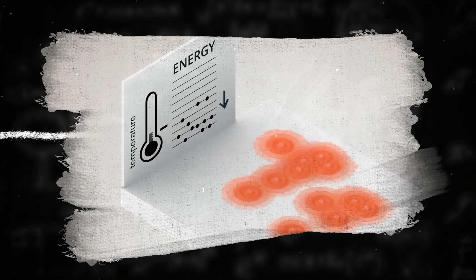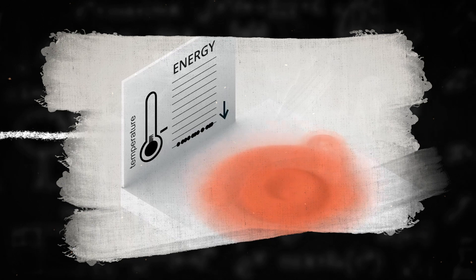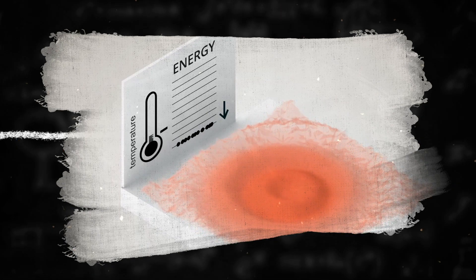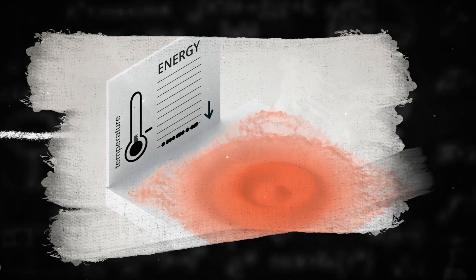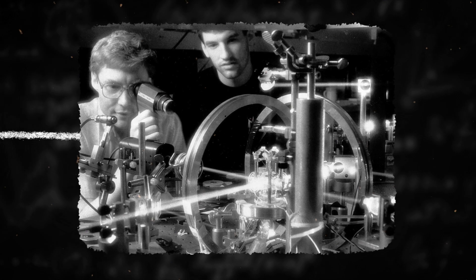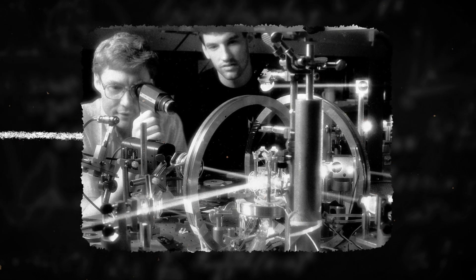Einstein proposed that cooling bosonic atoms to extremely low temperatures would cause them to condense into the lowest quantum state, creating a new form of matter. In subsequent years, various research groups attempted to create a laboratory Bose-Einstein condensate.